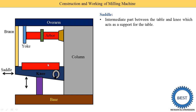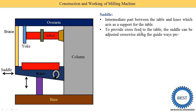The saddle is an intermediate part between the knee and table, providing support to the table. To provide cross feed to the table, the saddle can be adjusted crosswise along the guideways provided on the top of the knee. The saddle moves in this direction — going near to the column or away from the column.